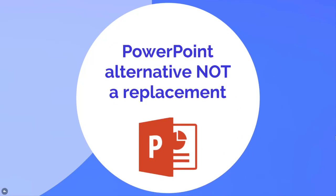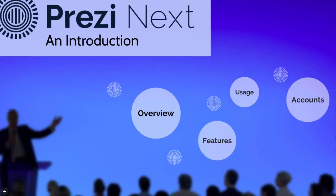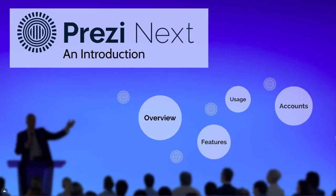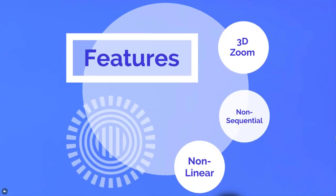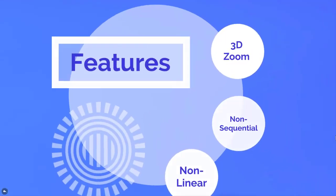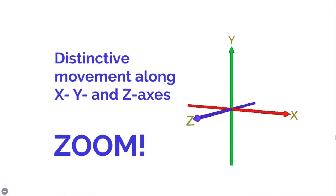Prezi Next is ideal for many, but not all, types of presentations. It has several unique features that set it apart from typical slideware. The most obvious is its distinctive zooming movement. Instead of storing content on multiple slides, text and images are scattered across one large canvas. When presented, it moves along the X and Y axes as though the viewer is flying over the canvas, then zooms in on the Z-axis, giving the viewer a feeling of moving in and out of the presentation.